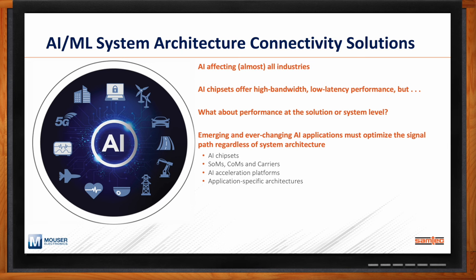We do have to ask about performance — not only from a speed standpoint, but how much power draw, how do I get rid of that power, how do I get rid of the thermal? Because things are so application-specific, Samtech really sees this going in four areas: AI chipsets, the embedded computing ecosystem with system-on-modules and computer-on-modules, carrier cards, unique AI acceleration platforms, and application-specific solutions.